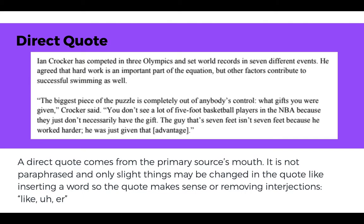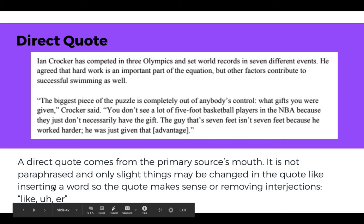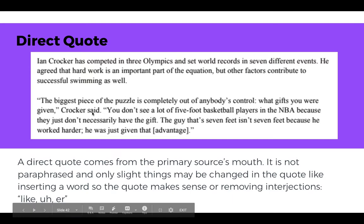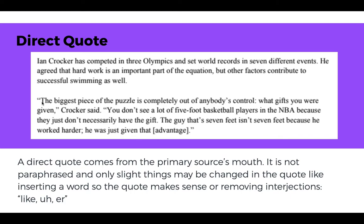Let's talk about interviewing and copy terms. A direct quote comes directly from the primary source's mouth — it's not paraphrased. Only slight things may be changed, like inserting a word for clarity or removing interjections like 'uh,' 'er,' or 'like.' We should always use attribution in the form of: quotation marks, the quote, comma, closing quotation marks, then 'person said,' where that person has already been introduced.